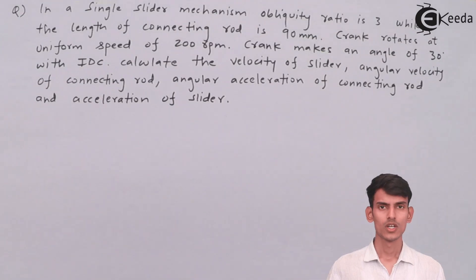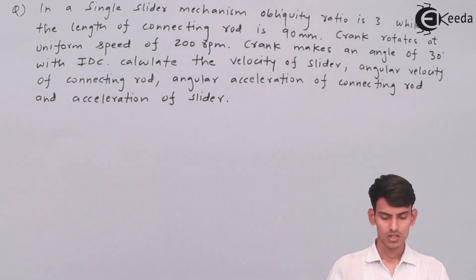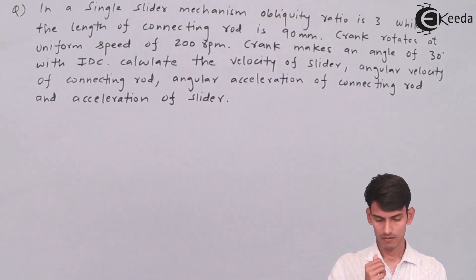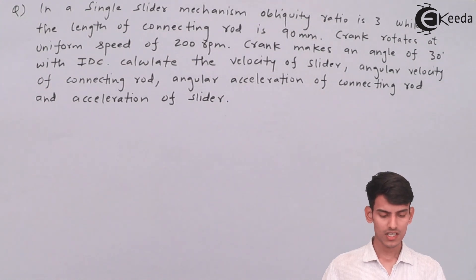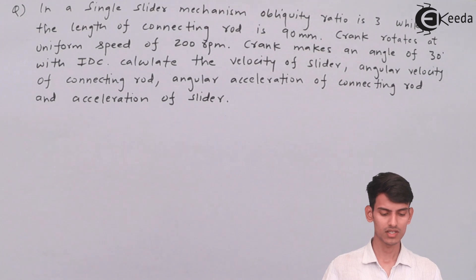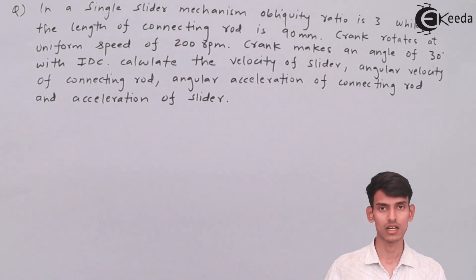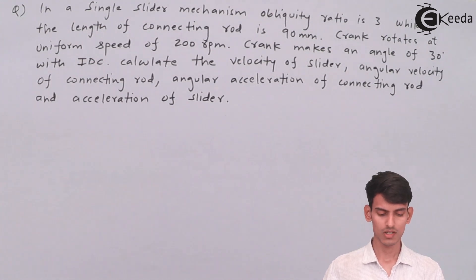In a single slider mechanism, obliquity ratio is 3. Obliquity ratio is nothing but N, which is L by R, so it's given directly. The length of the connecting rod is 90 mm. Crank rotates at a uniform speed of 200 rpm. Crank makes an angle of 30 degrees with IDC. We need to calculate the velocity of slider, angular velocity of connecting rod, angular acceleration of connecting rod, and acceleration of slider — four things to be found.